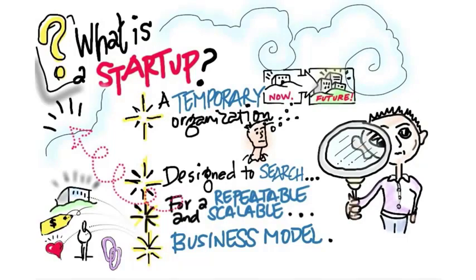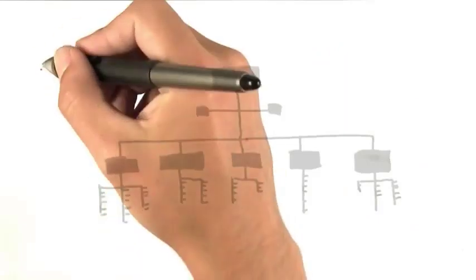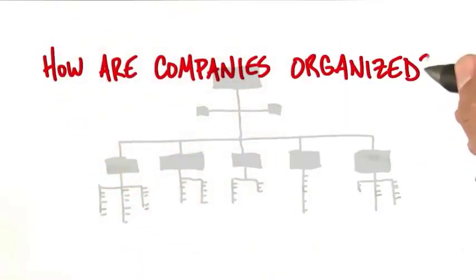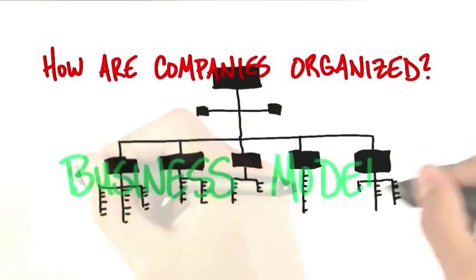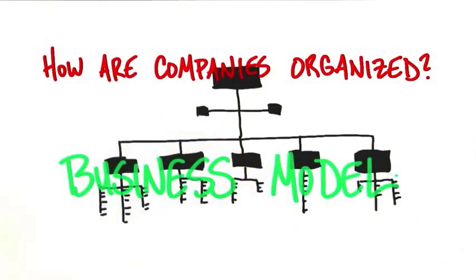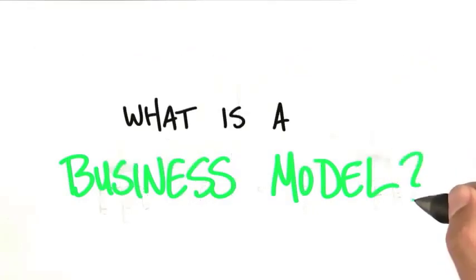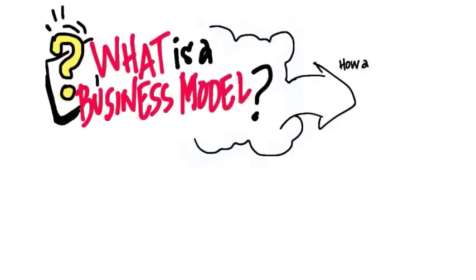Let's take a look at how we become a company. One of the interesting things about thinking about a startup is how your company is going to be organized. The most efficient way to think about all the pieces is by a business model. A business model is how a company creates value for itself while delivering products or services for its customers.